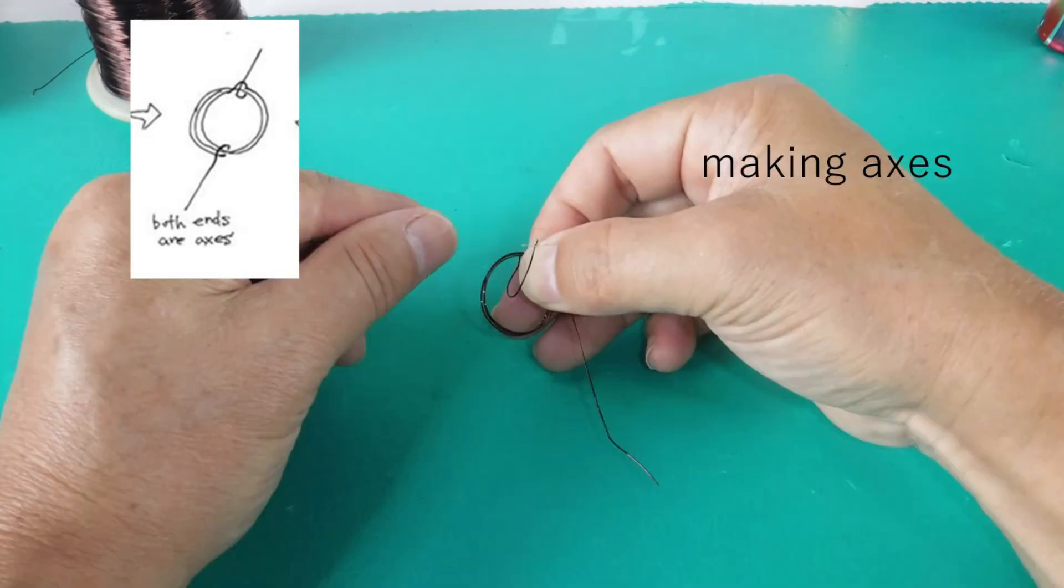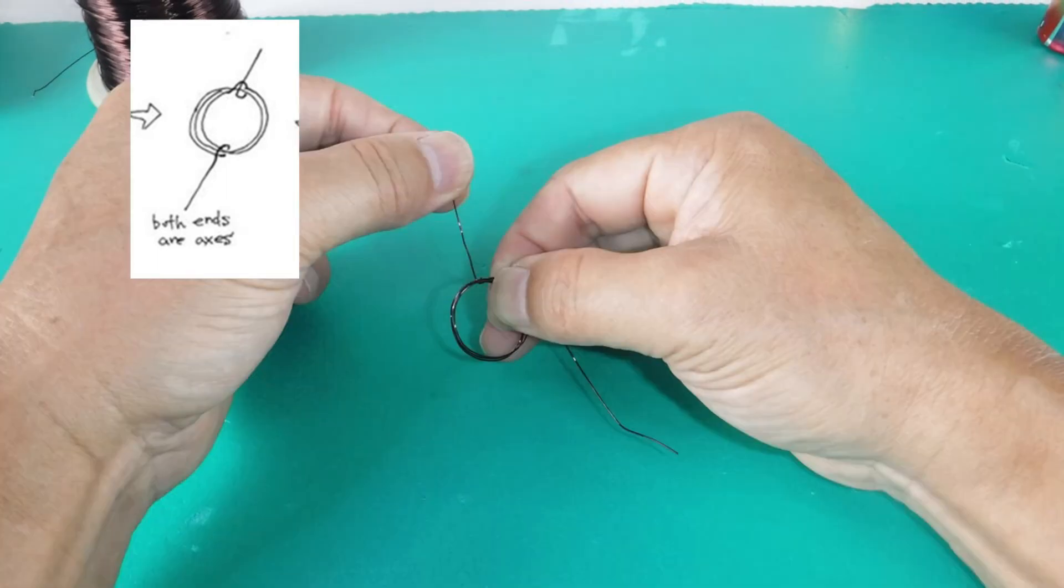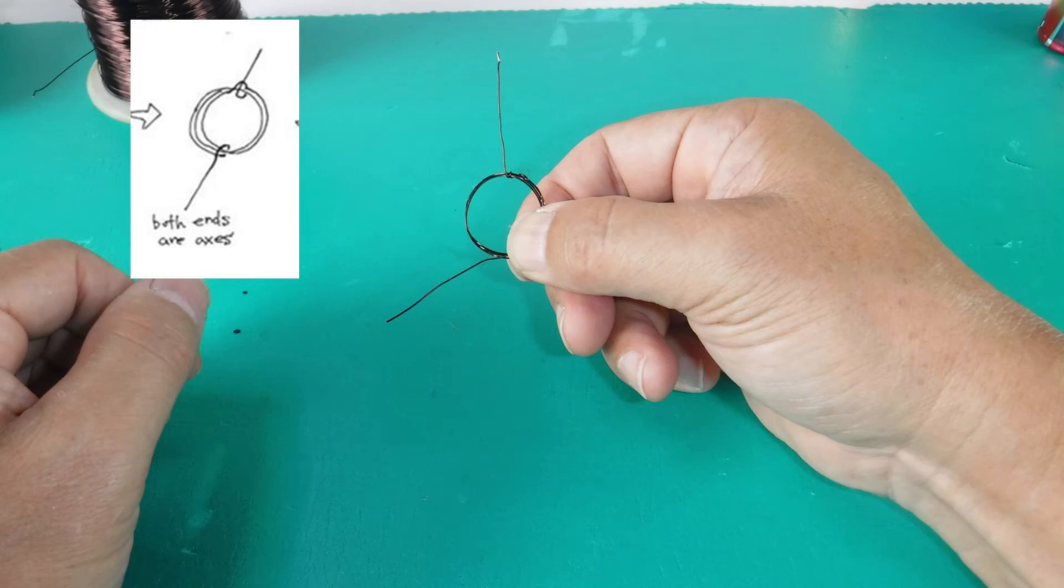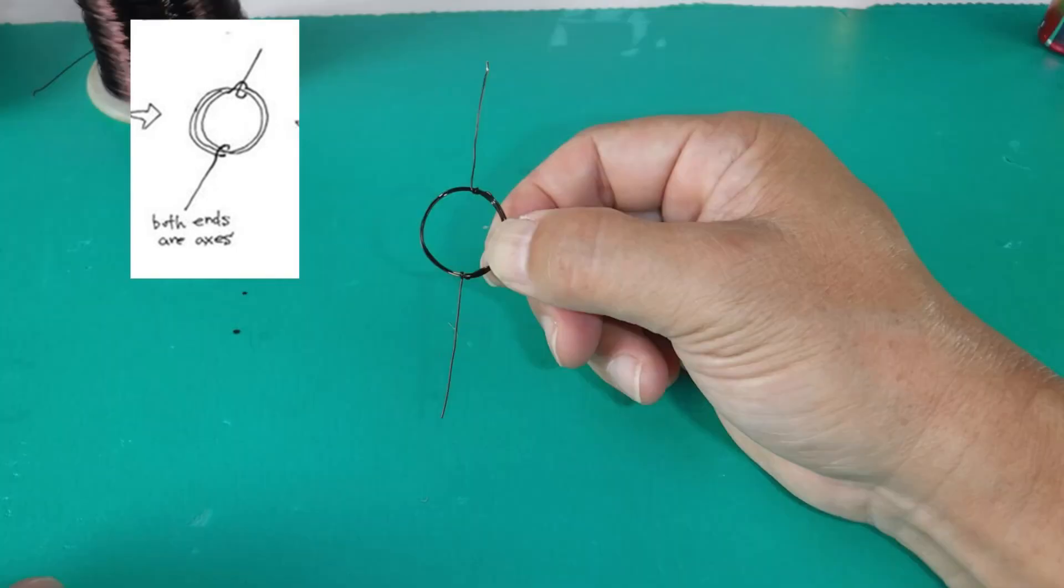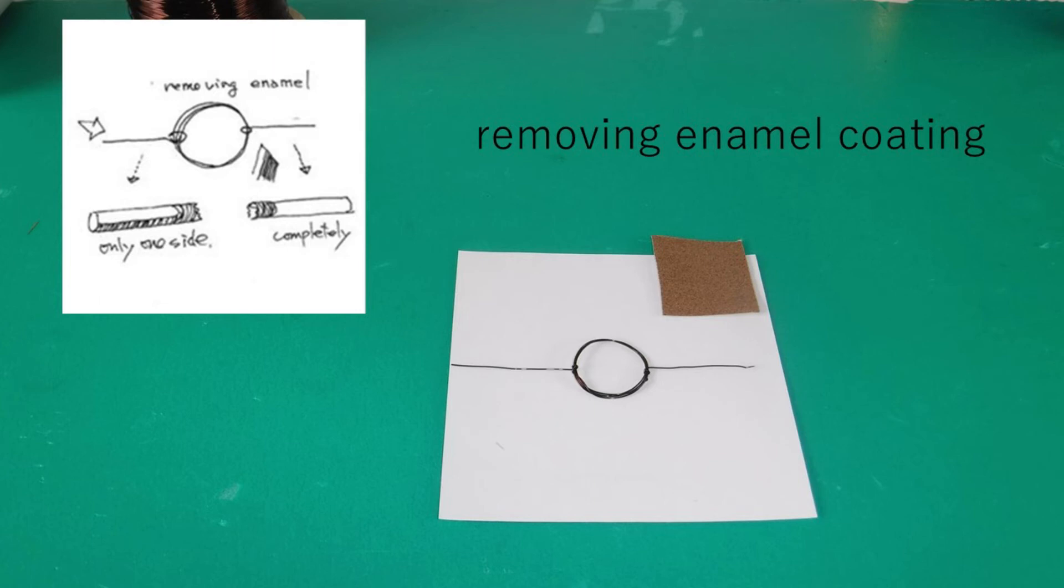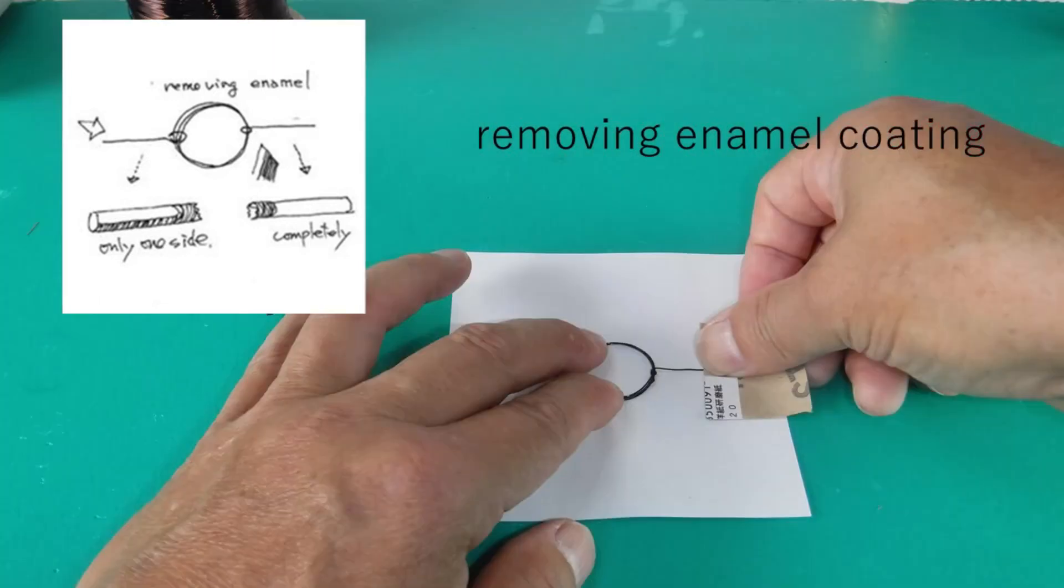Make axis on both sides of the coil. Remove the surface coating of axis to flow electrical.